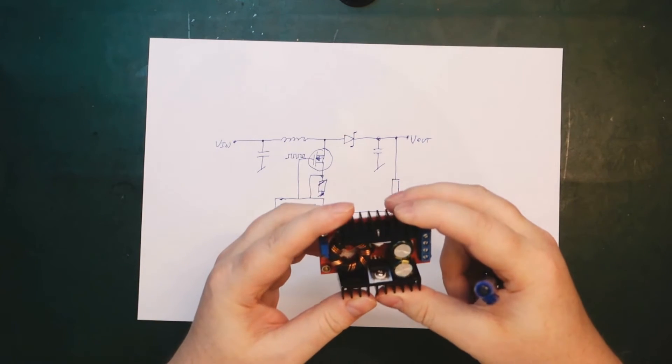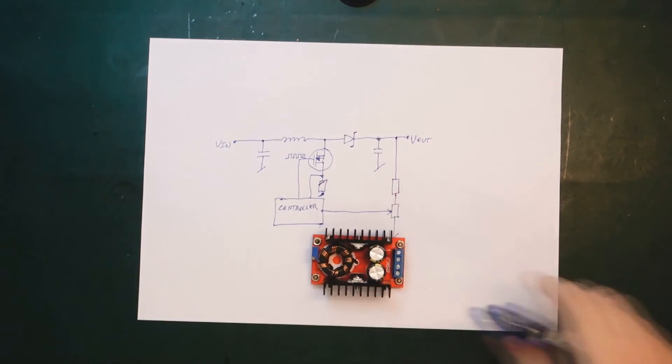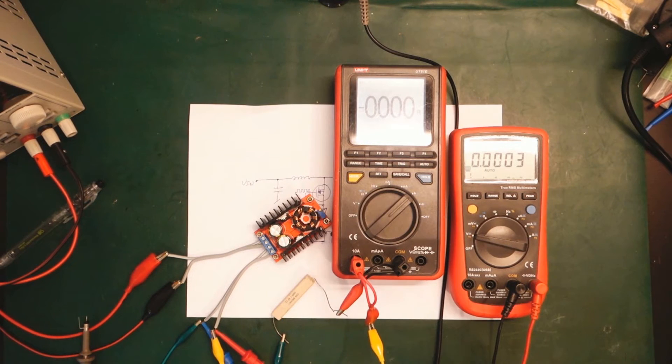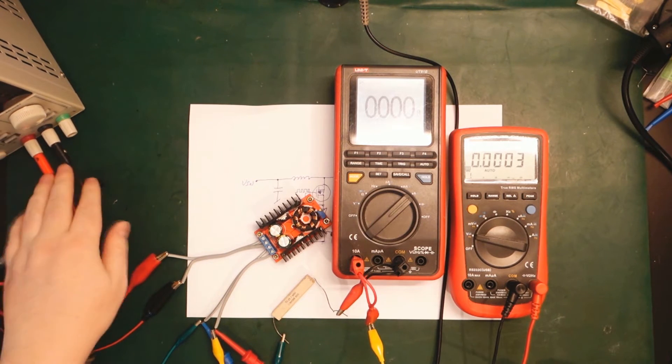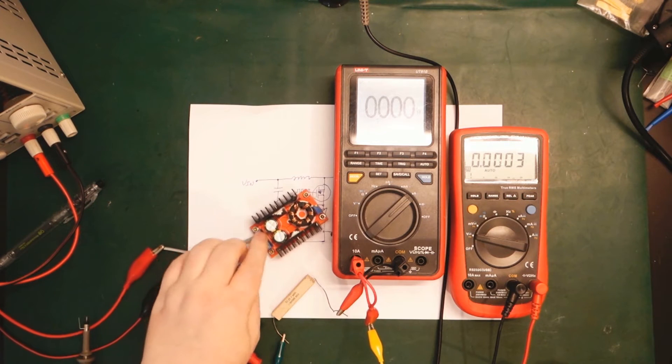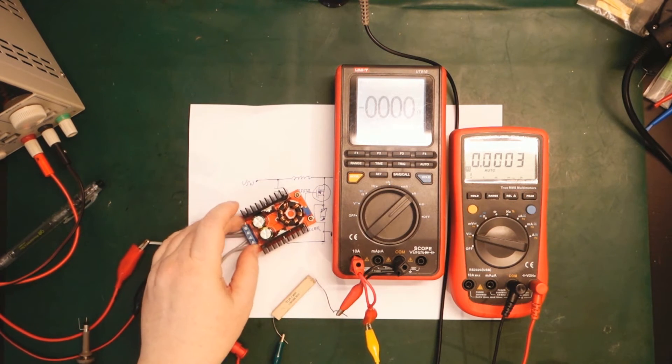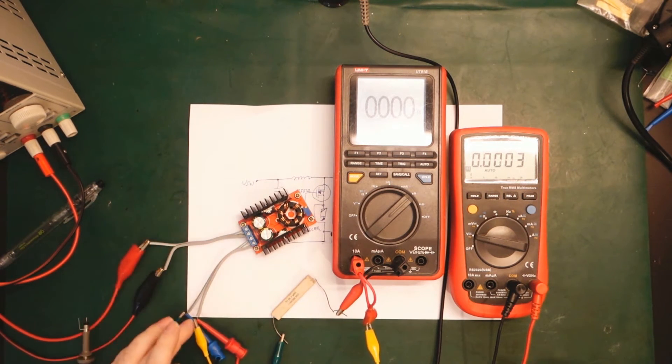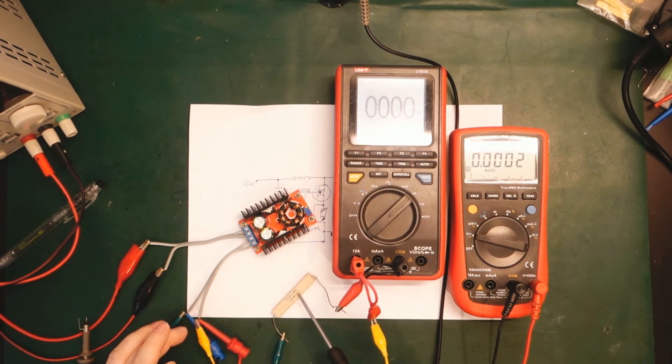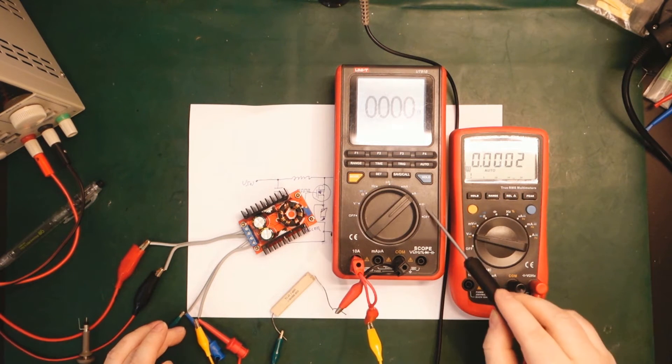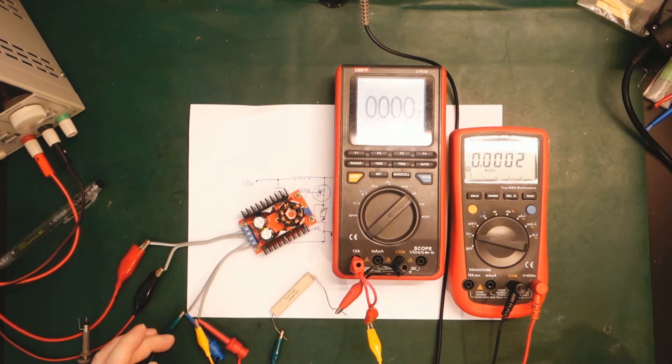So I got everything connected here. We have a bench power supply over here. It will supply 12 volts to the input of our boost converter here. And on the output, we have a voltmeter. And then we have a small load here. So that's just a 150 ohm resistor. And then we have an amp meter here. And we can see how much current is on the output. Let's try switch it on.